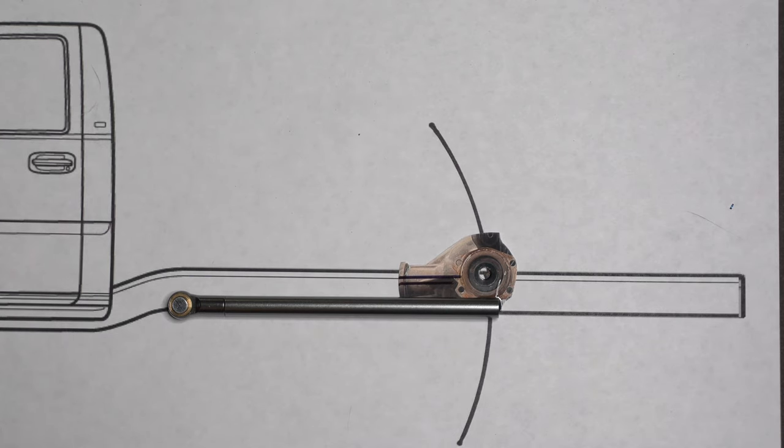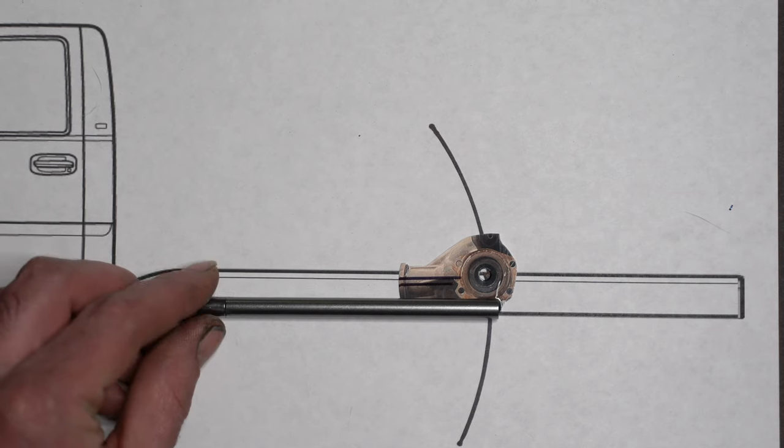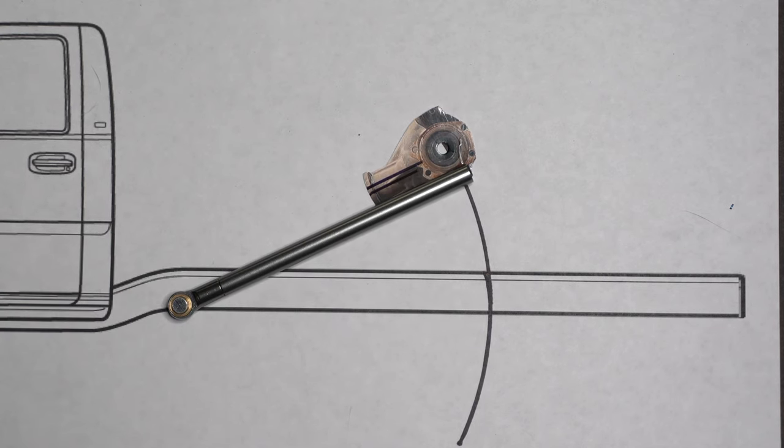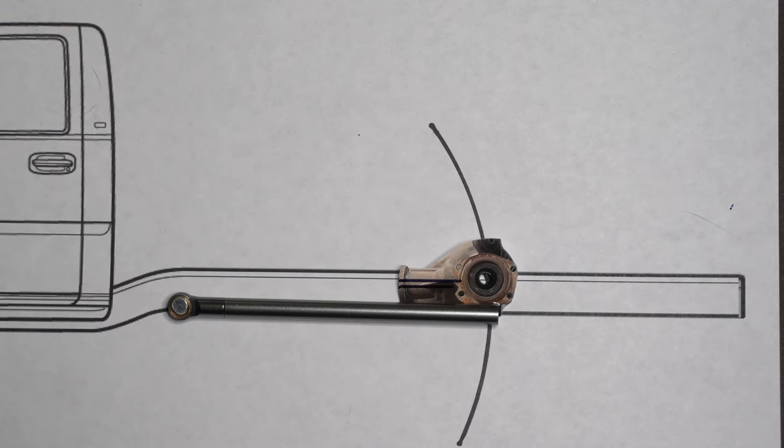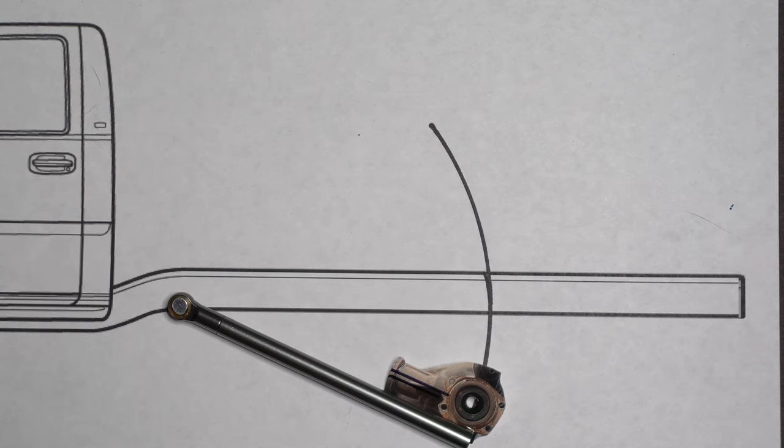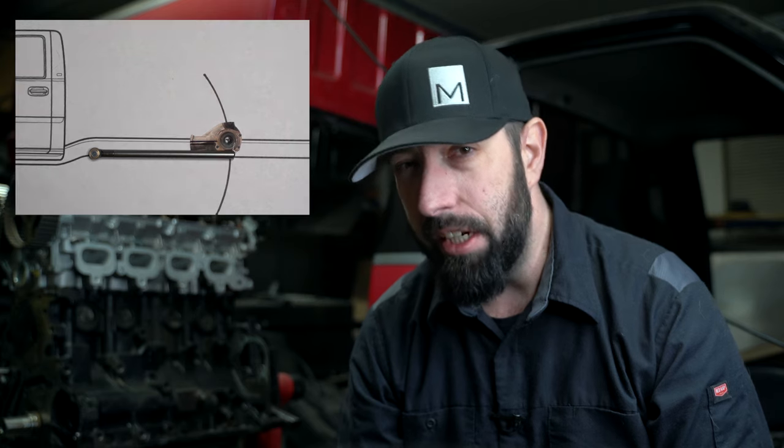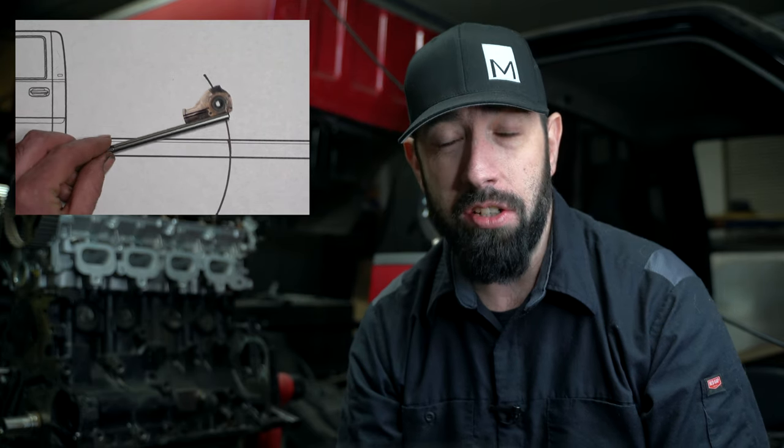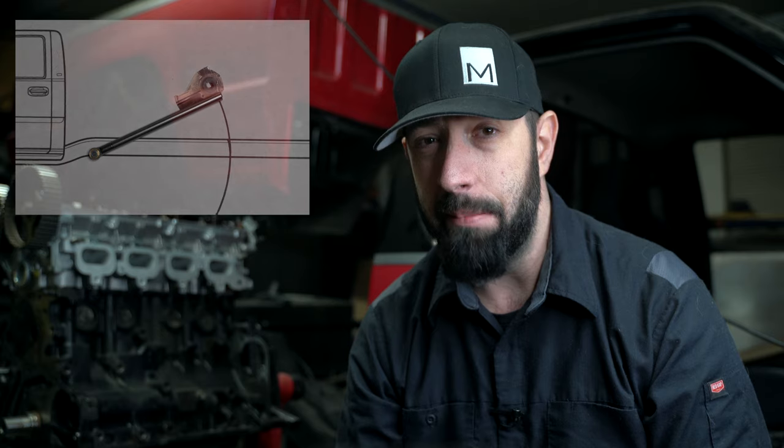With our two-link setup, notice that with our truck fully laid out, the pinion angle points downwards towards the ground. At about half travel, the pinion angle is parallel to the ground. And fully lifted, the pinion angles upward. Why is that? The reason is pretty simple on this setup. Since our axle is solidly mounted to the link bar, the pinion angle will change in direct proportion to the change in the link bar angle. In other words, if the link bar changes five degrees, the pinion angle will change the same amount.